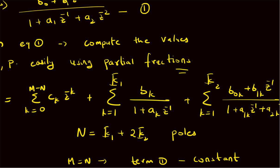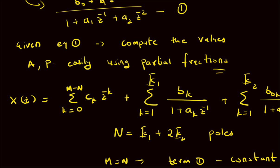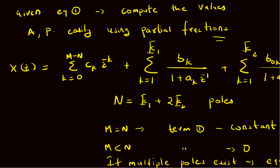Assuming K_1 real poles and K_2 complex conjugate pole pairs, the total number of poles is N equals K_1 plus 2 K_2. When M equals N, the first term becomes a constant; when M is less than N, it vanishes. If there are multiple or repeated poles, those must also be considered in the partial fraction expansion. Thus we have looked at the decomposition of a rational z-transform, which is very useful for implementation of discrete time systems. Thanks for watching.